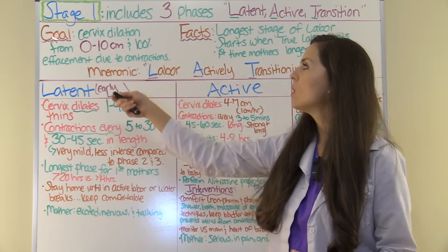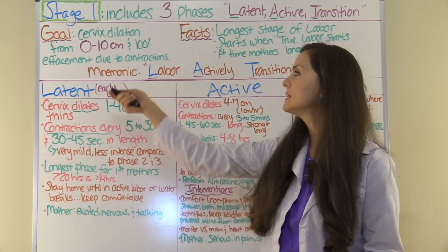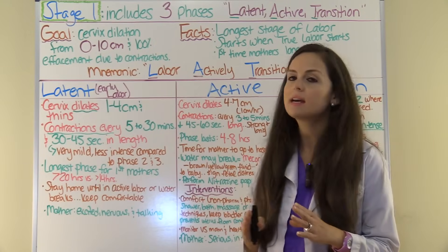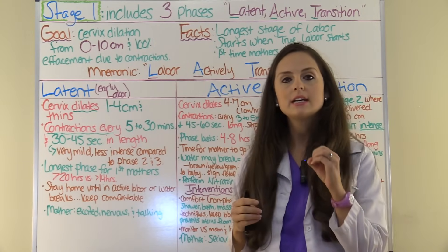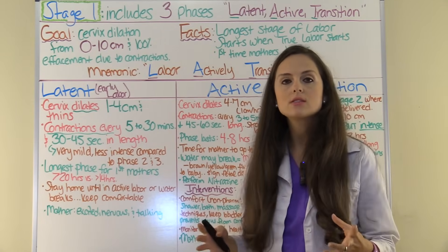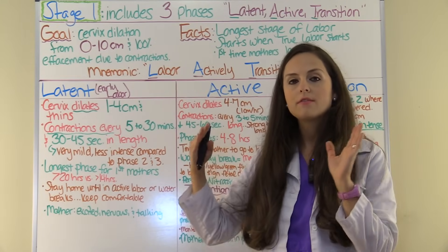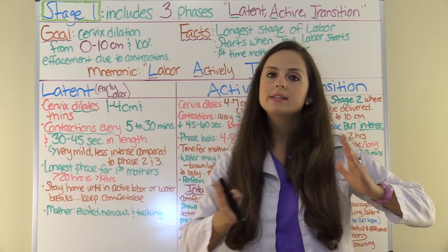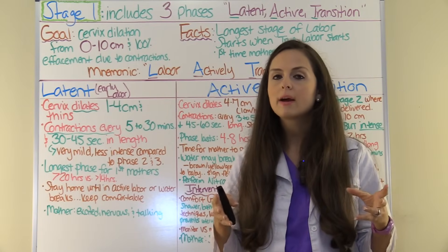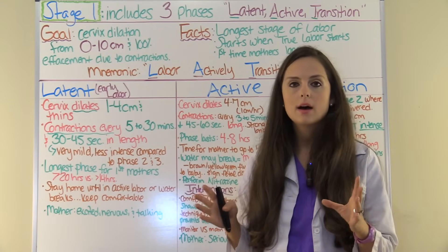Let's look at stage one of labor in depth. The whole goal of stage one is to get the cervix dilated from zero to ten centimeters and 100% effaced. Dilation is the opening up of the cervix and effacement is the thinning of the cervix. This all happens due to contractions, which will start out very mild in the latent phase and become really intense by the transition phase, because the cervix is trying to open all the way up so the baby can be born.